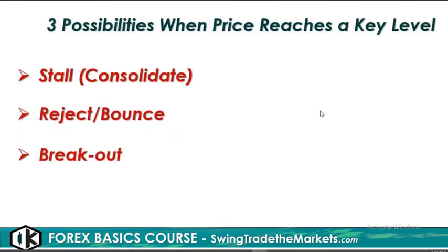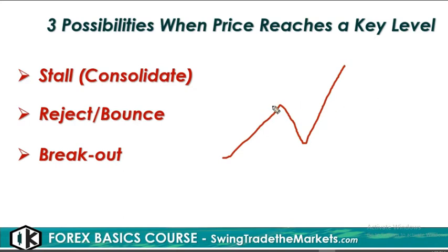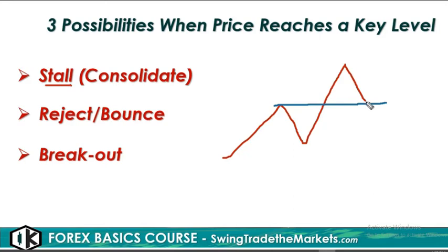There are three possibilities when price reaches a key level. In our uptrend example with a support level, if you're planning to buy at the support level and price arrives there, the first possibility is it might stall — meaning it will consolidate there. A consolidating market means the market is in indecision; it has not yet decided whether it will go down or go up.